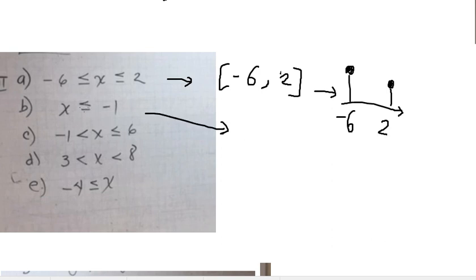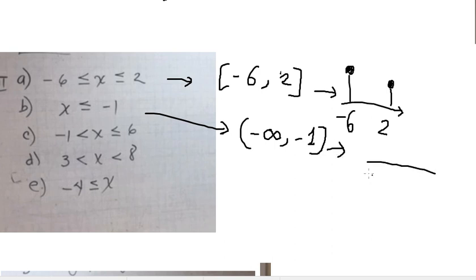For this one, s is smaller than or equal to negative one. The graph should look like this, and we need to highlight the arrow pointing to negative infinity.